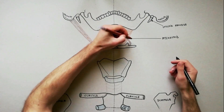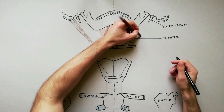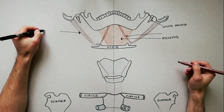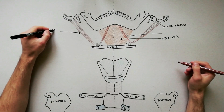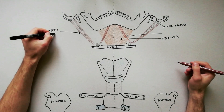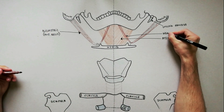The intermediate tendon is anchored to the junction of the body and the greater cornu of the hyoid bone by an inverted U-shaped fascial sling.